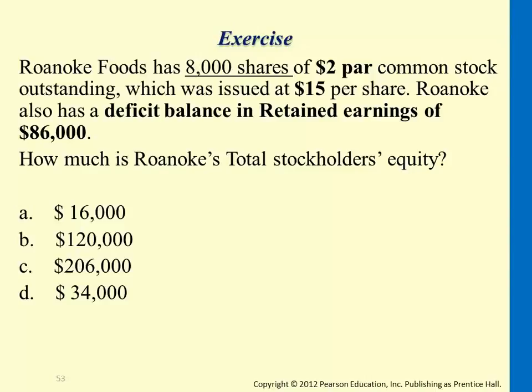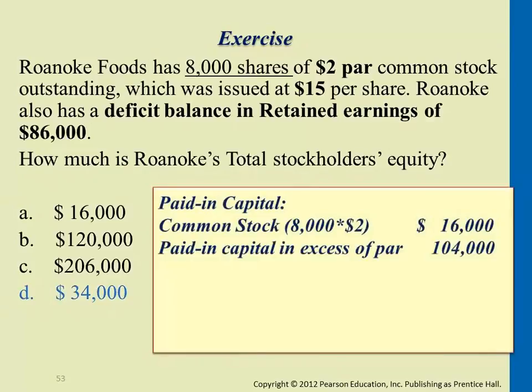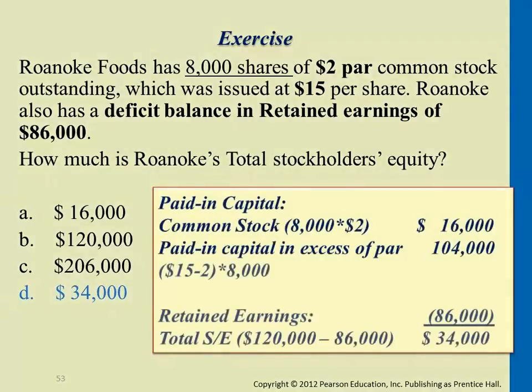Sometimes it happens in the beginning of the company when they haven't started generating net income yet — all along they had was net loss. So it tells you the net loss total amount is $86,000. If I ask you to complete just the stockholders' equity section for this problem, it would look like this.